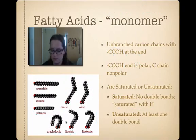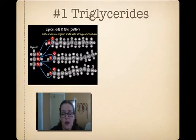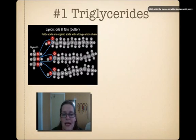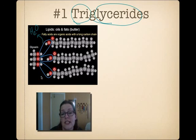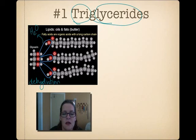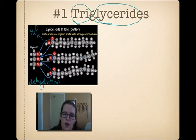The first group we'll look at are triglycerides. You'll notice there are three long fatty acid chains - that's where the 'tri' comes from. Those three fatty acids are bound to a glycerol molecule, which is where 'glyceride' comes from. The dehydration reaction takes place here: water comes out and a new bond forms between the oxygen and the carbon on each of these molecules. This one is a saturated fat, while these two are unsaturated with double bonds.